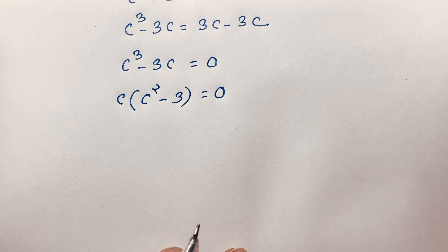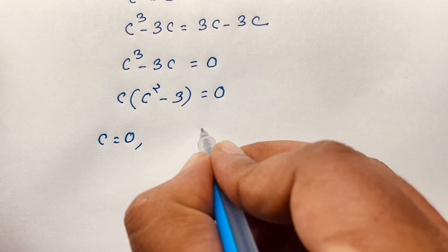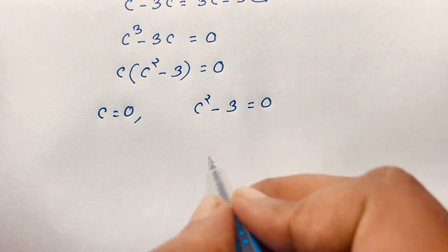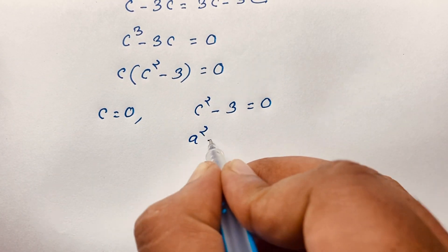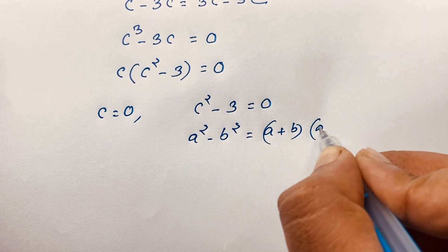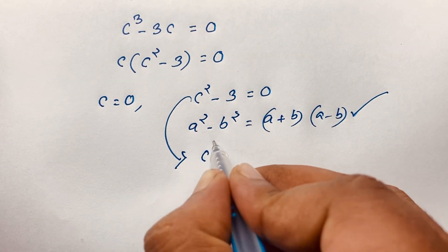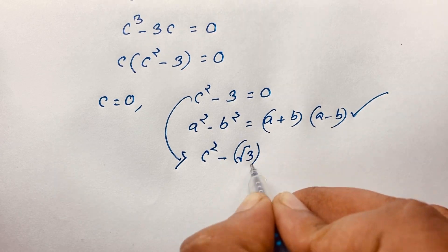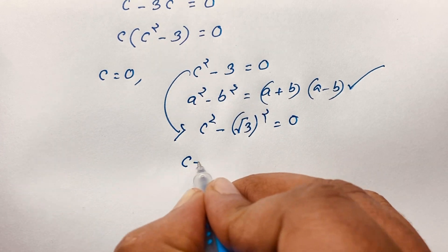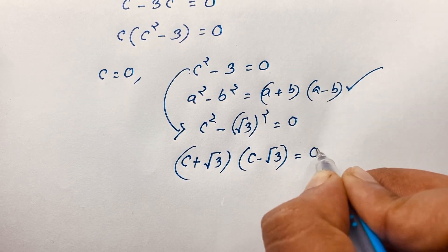So we are finding out here two cases. Our first case: C is equal to 0. In the other case: C squared minus 3 is equal to 0. Now, in this expression, we know that a squared minus b squared equals a plus b times a minus b. If I follow this law, this expression will be C squared minus square root of 3, whole to the power 2, is equal to 0. Then if I apply this formula, it will be C plus square root 3 times C minus square root 3 is equal to 0.